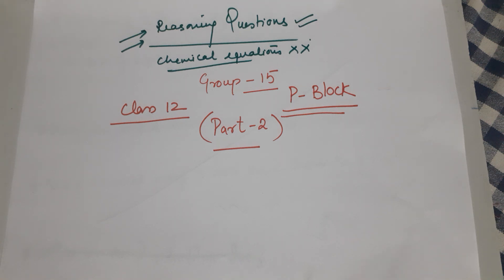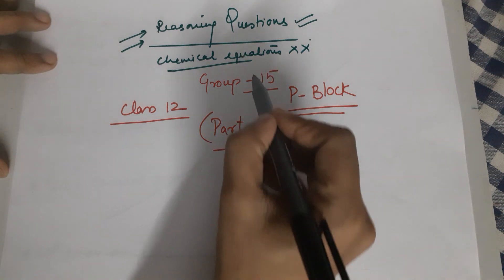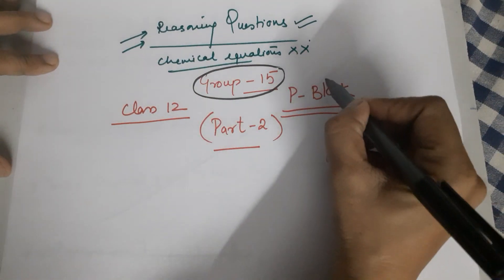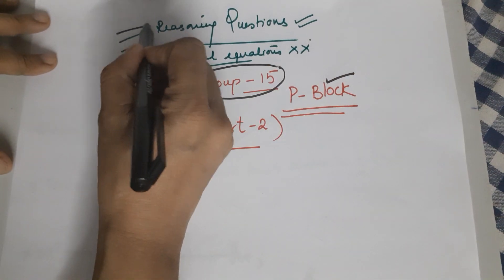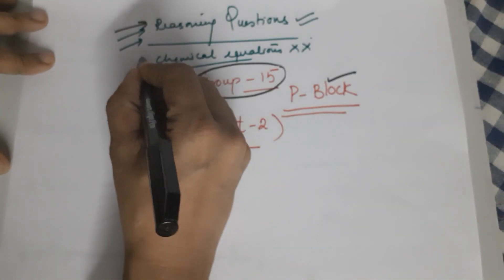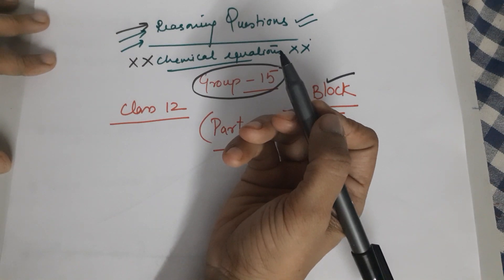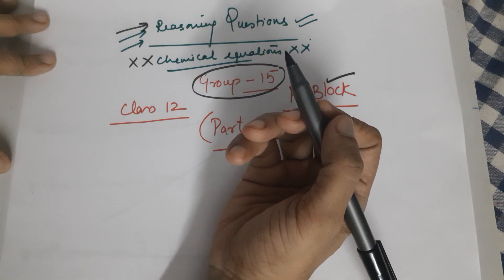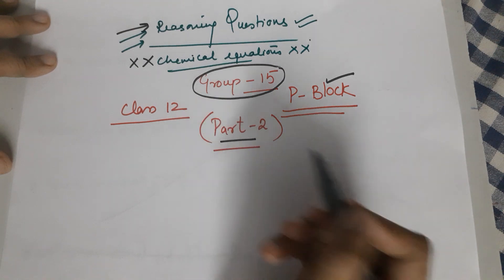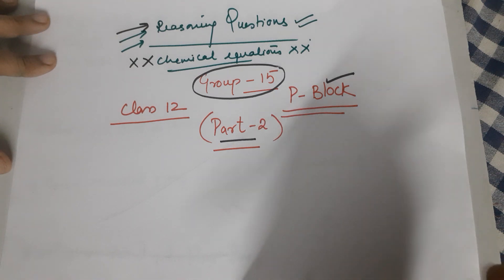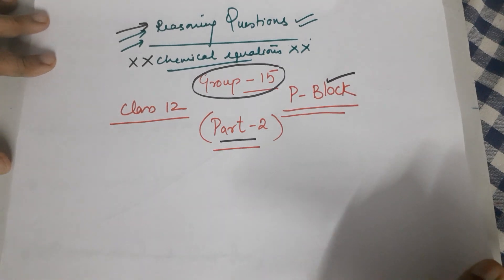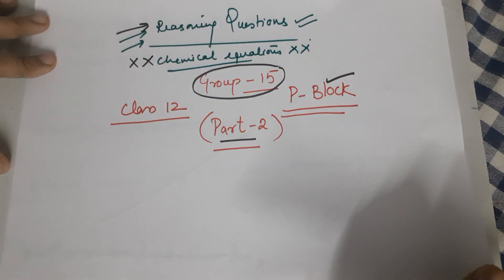Good morning, Class 12. I had already done Group 15 of the P-block in Part 1, where I clearly mentioned that I would only be doing the reasoning questions. We are not doing the chemical equations, which you can do on your own. Coming to Part 2, I would like to wind up Group 15, which I had left halfway in the first part, beginning with the reasoning questions of Group 15 that we are left with.